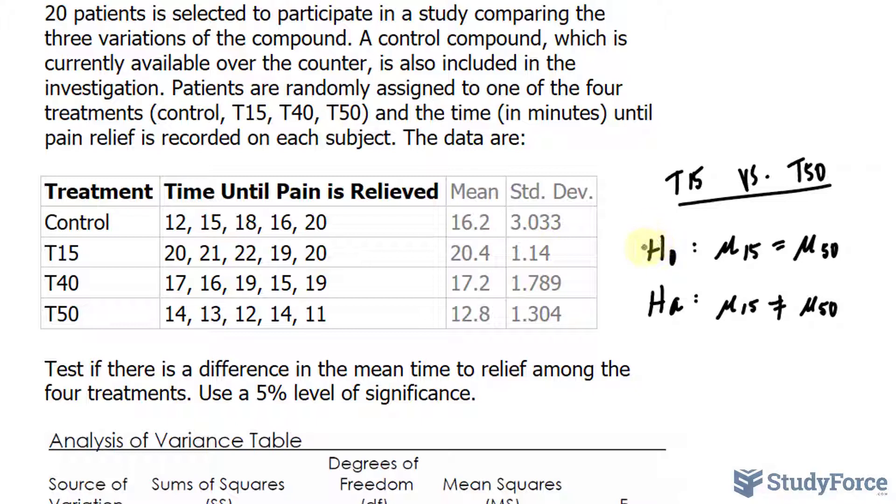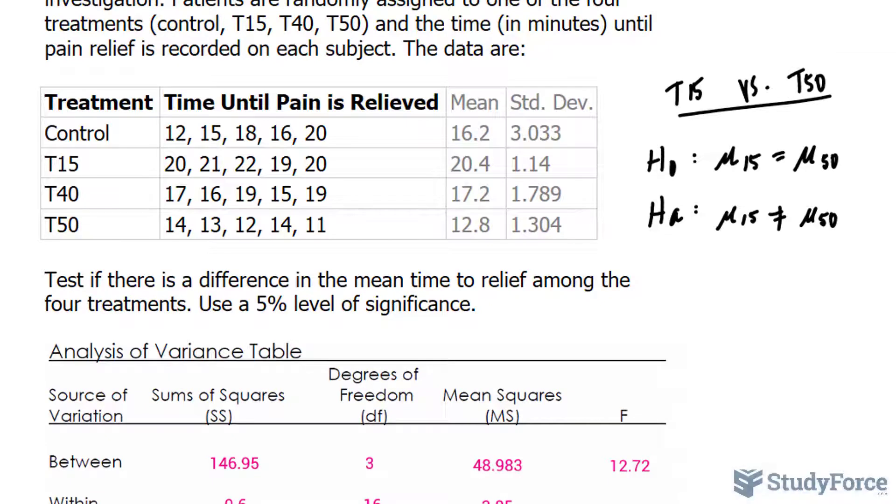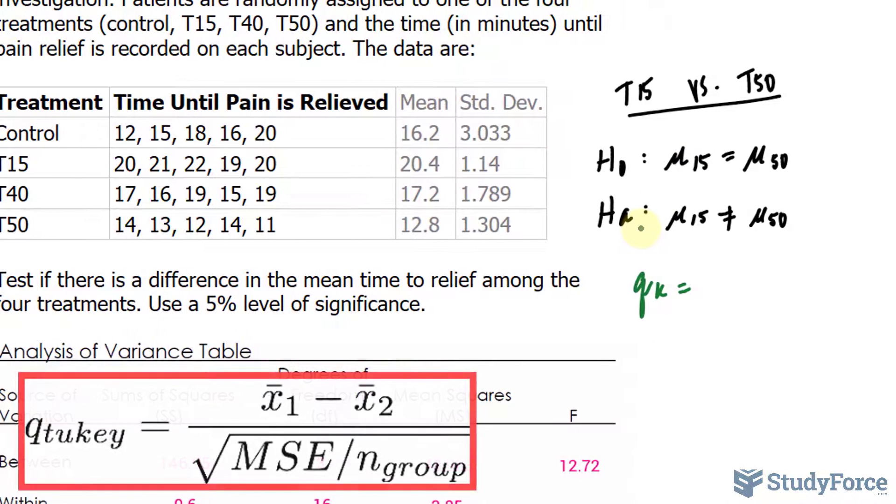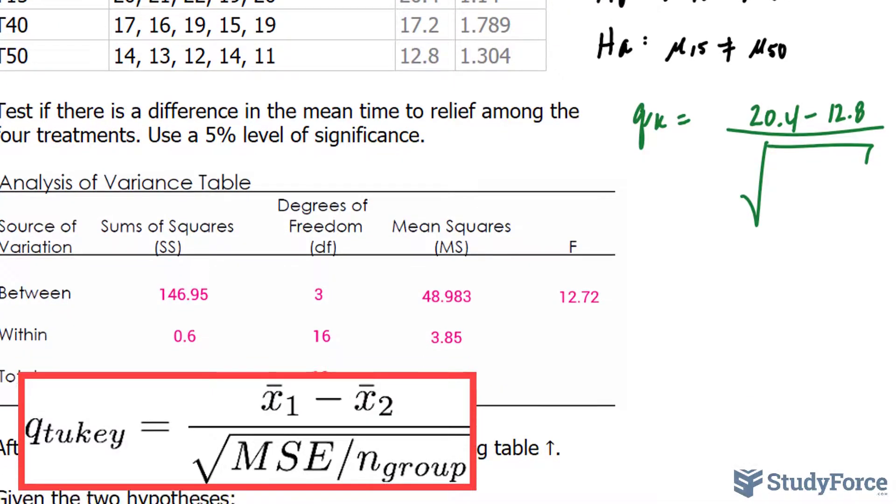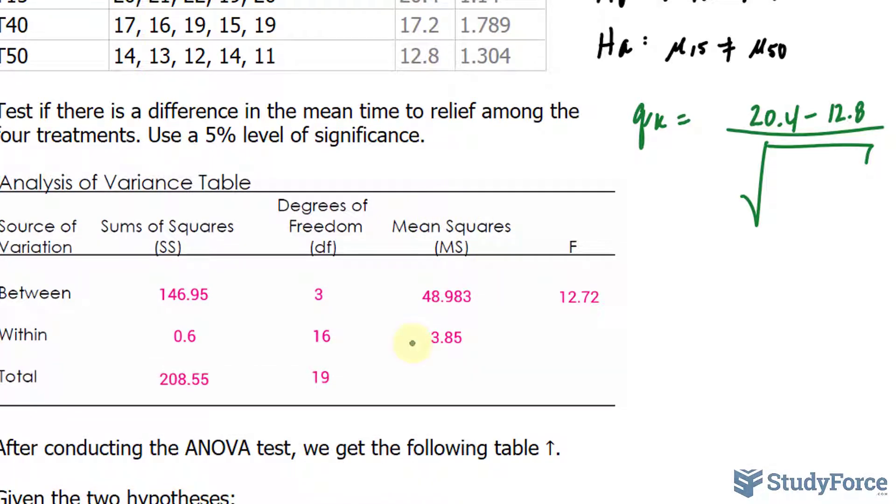If we have enough evidence to reject the null in favor of the alternative, we will do another comparison between T15 and the second smallest mean. We need to calculate a test statistic, represented by Qₖ. We will subtract the means of the highest minus that of the lowest. So the mean of T15 is 20.4 minus the mean of T50 is 12.8. At the bottom, we take the square root of the mean square within.